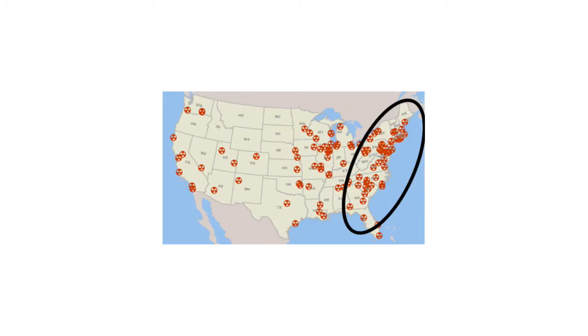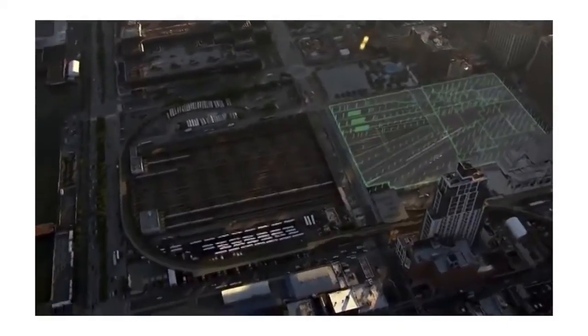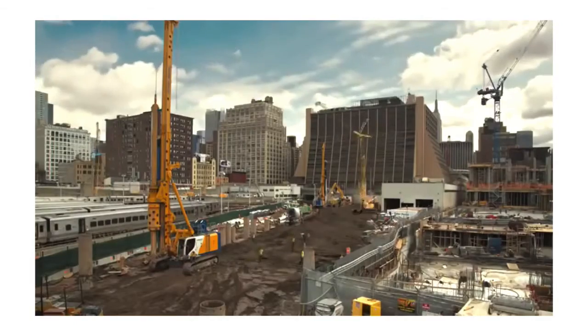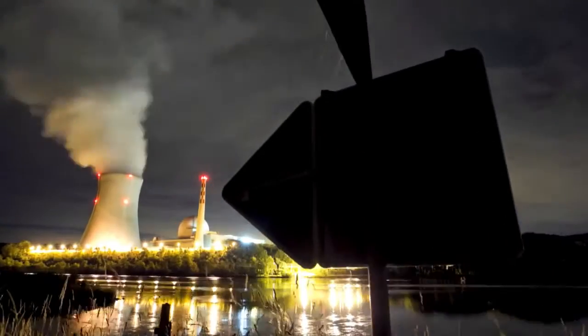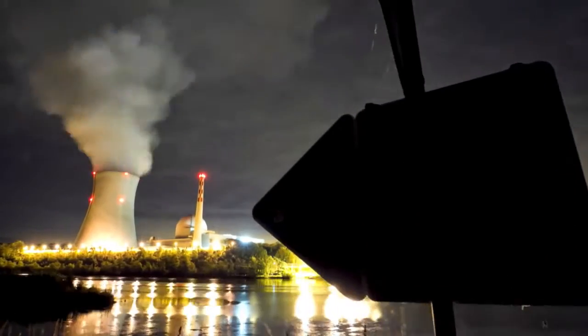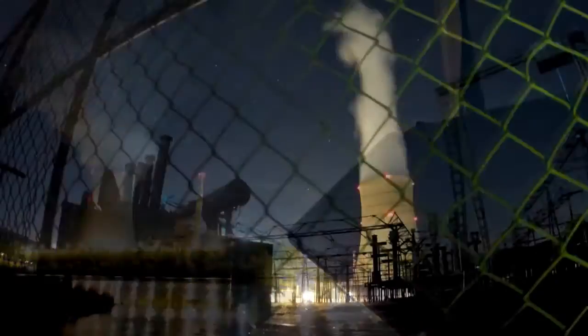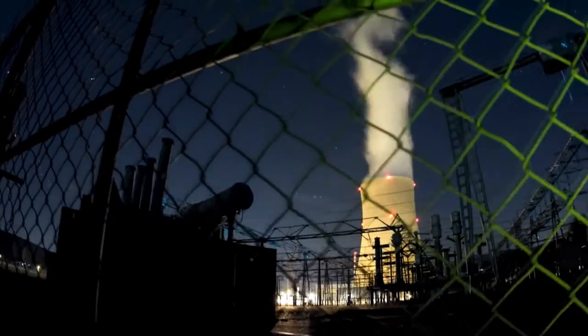Do you notice any patterns of where the nuclear power plants are? That's right, they're on the east coast. This is because the east coast uses more power than other areas of the United States. It also makes sense that power plants are along the coast because they need a constant supply of water to make power.